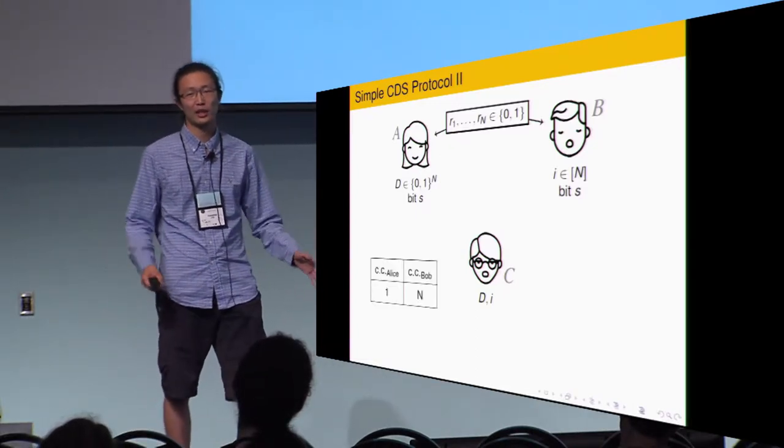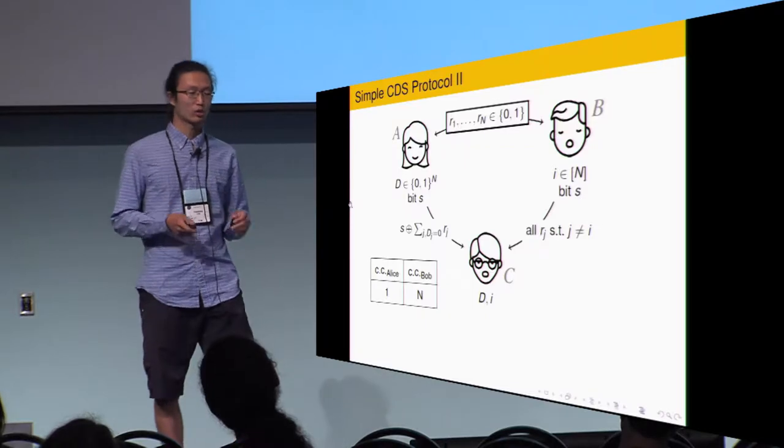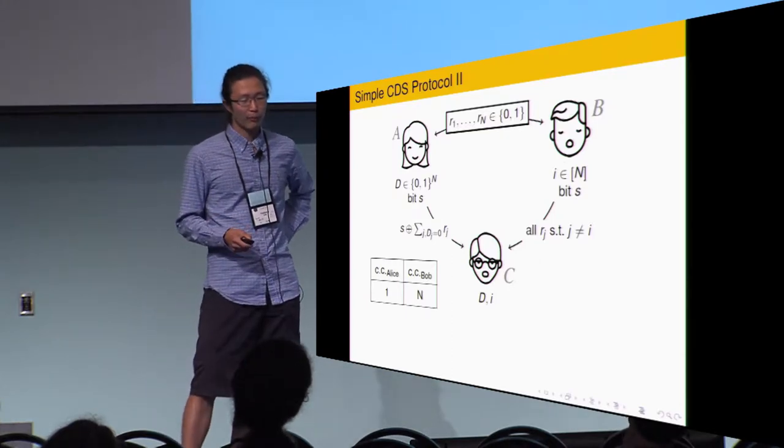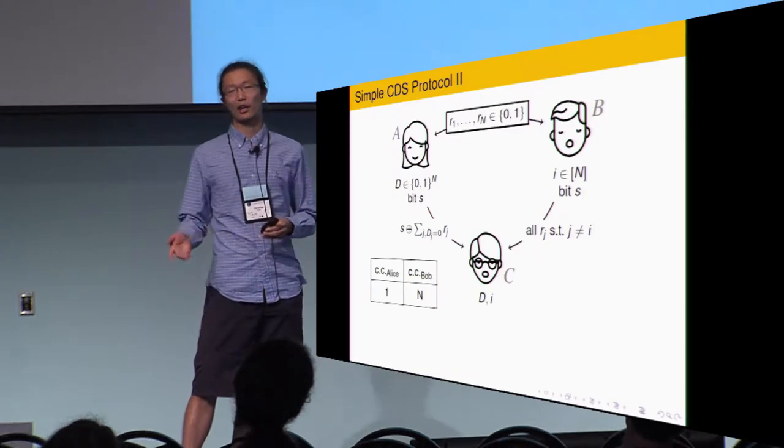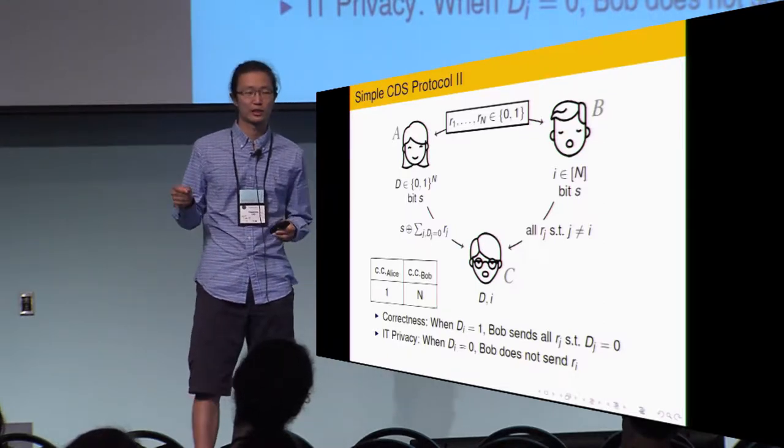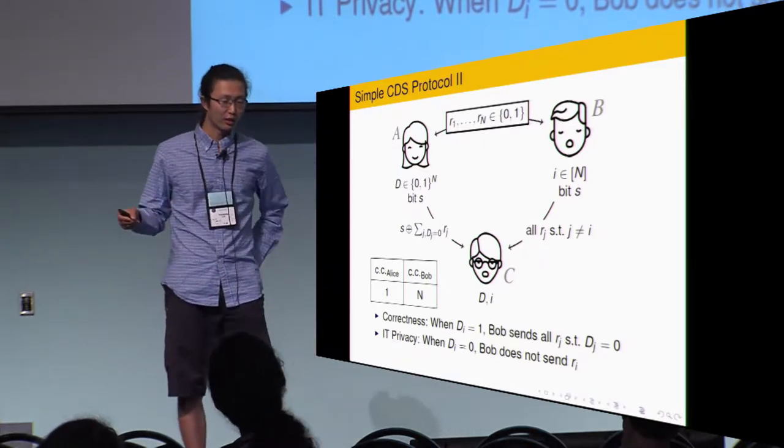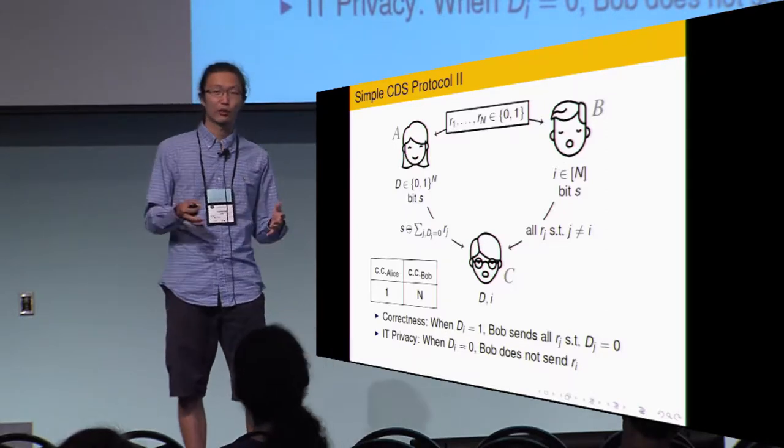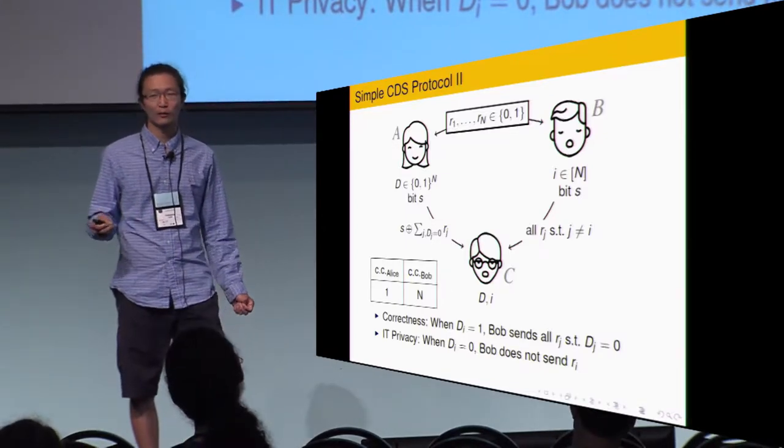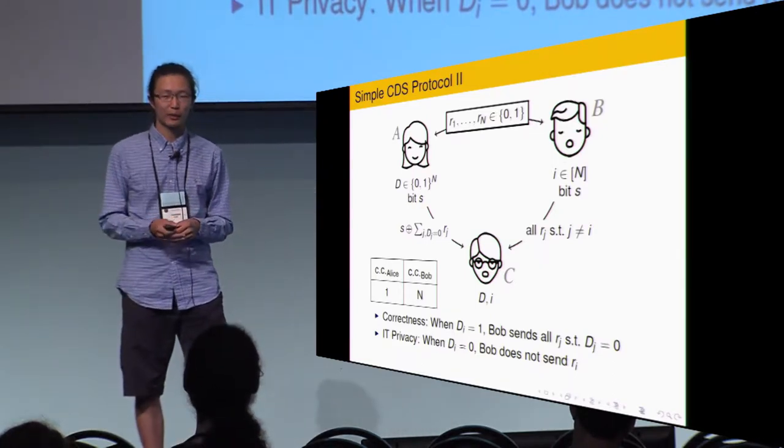We have another toy construction. This one, Alice's communication complexity is minimized to one bit. Alice sent the secret XOR with all the random bit R_j, such that D_j is zero. And for Bob, Bob sent all the random bit except R_i. So, you can see here, there is only one unsent secret bit, which is R_i. R_i is used to encrypt secret if and only if D_i is zero. Therefore, we also have both privacy and correctness.